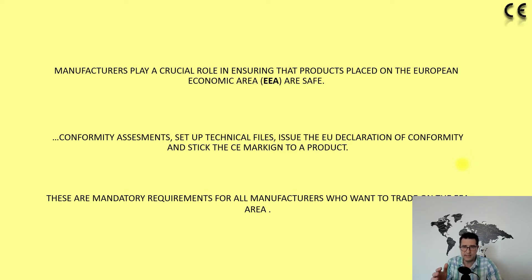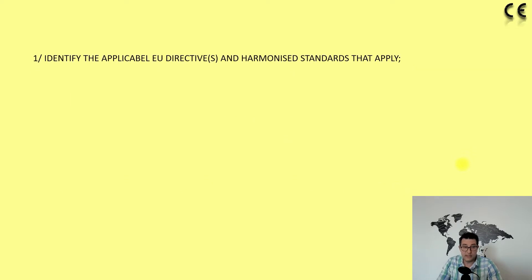As a manufacturer, you have to follow six simple steps in order to be able to attach a CE marking to your product. The first step is to identify the applicable EU directive or directives and the associated harmonized standards that apply to that particular product.